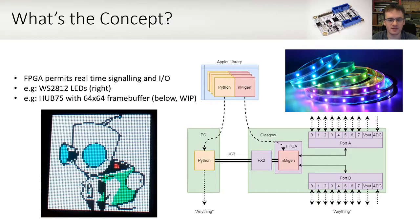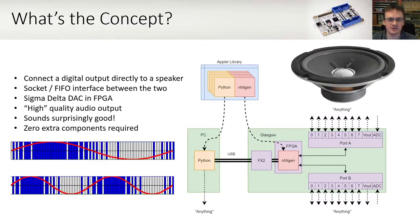For example, you can connect to a string of RGB LEDs like WS2812, and you can keep a Hub 75 panel refreshed. We've currently got a 3-bit output with a 64x64 pixel frame buffer, though this is work in progress and there are improvements to come. You can connect a speaker directly to Glasgow, push audio samples over USB, and the gateway implements a Sigma Delta DAC, which effectively produces a pulse density modulation output. This sounds surprisingly good with zero extra components.